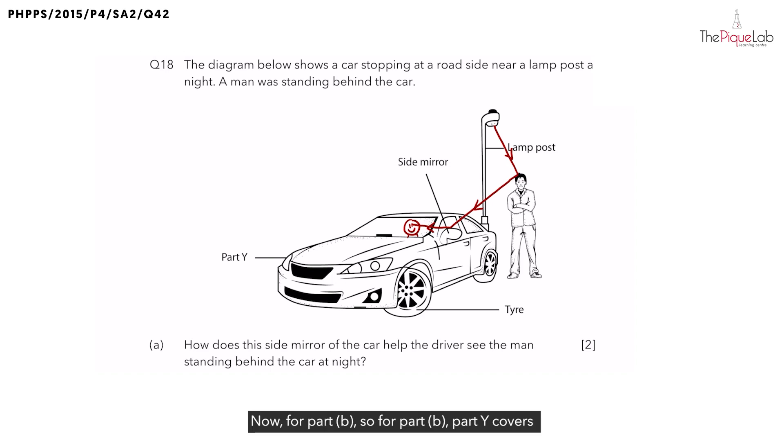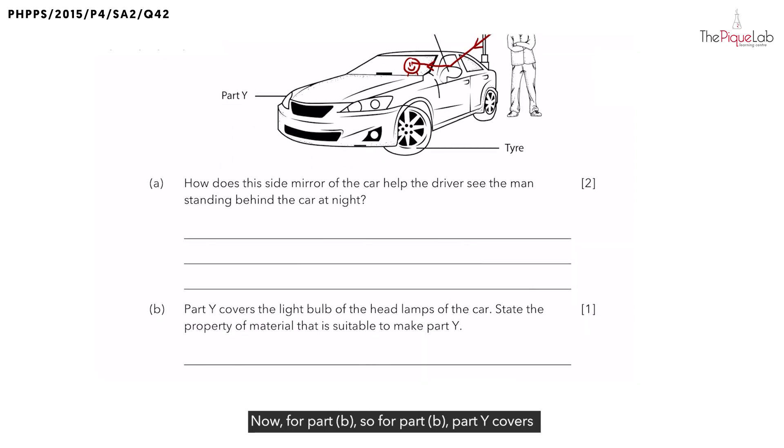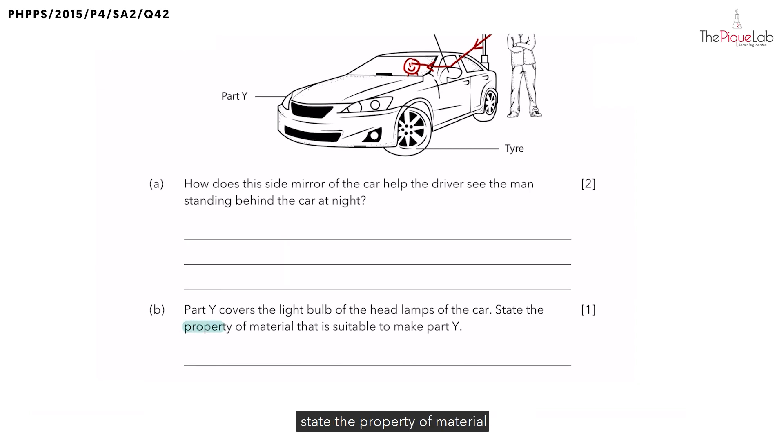Now for part B, part B states, part Y covers the light bulb of the headlamps of the car, state the property of material that is suitable to make part Y. So for light questions, when they ask for the property of material, what the question is looking for is the transparency of part Y. So I'll write this here. We're looking for the transparency of part Y.